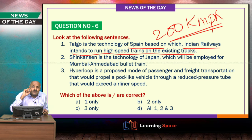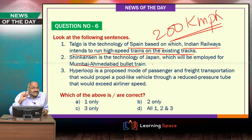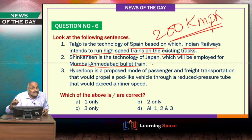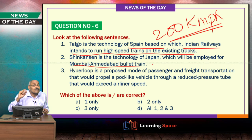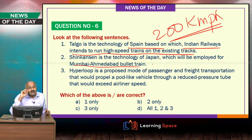The first bullet train of the country will run between Mumbai and Ahmedabad, based on Shinkansen technology of Japan. Japan is also going to support financially by giving a soft loan — when the terms, conditions, and interest rate are quite low, that is known as a soft loan. Shinkansen technology will be used for the bullet train project between Mumbai and Ahmedabad.